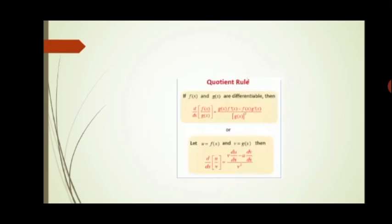The quotient rule is easy to remember if we write it in terms of u and v. As shown in the lower box on the slide, if f(x) = u and g(x) = v, then the derivative of u/v is (v·du/dx − u·dv/dx) / v². We can also write this as (v·u' − u·v') / v².